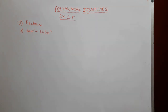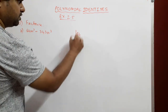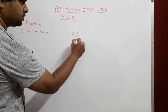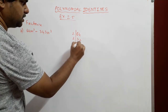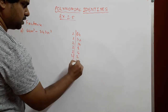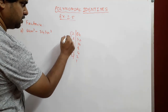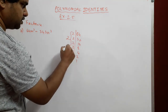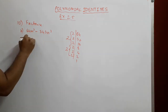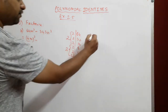The next problem is 64m³ - 343n³. First we need to find the factors of 64 and 343. 64 = 2⁶, so 64m³ = (4m)³. This gives us (4m)³ - 343n³.